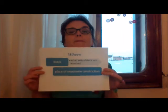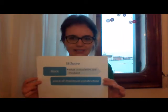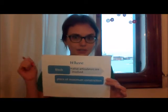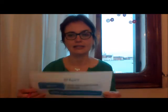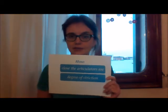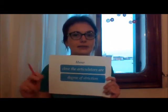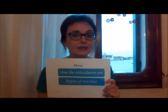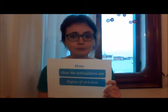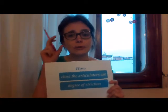In the previous lesson we tried to find the answer to the question of where the articulation of a consonant sound takes place — namely, what articulators are involved in the production of that sound. Today we are going to find the answer to the question of how close to each other the articulators are, and in what way the air flows in the vocal tract.